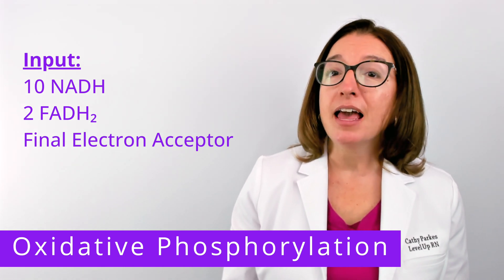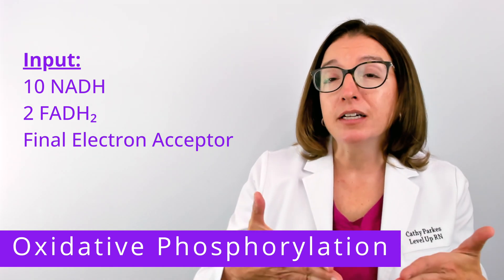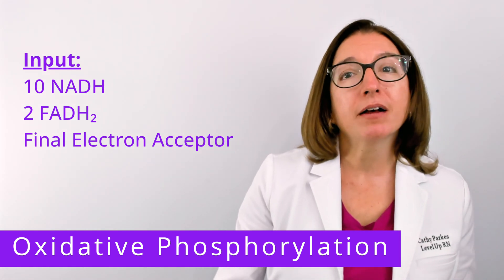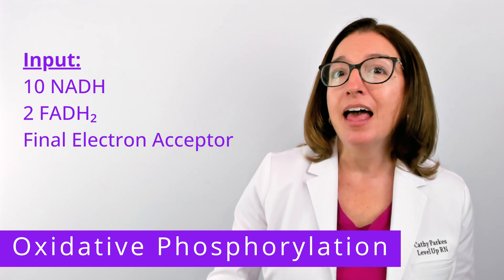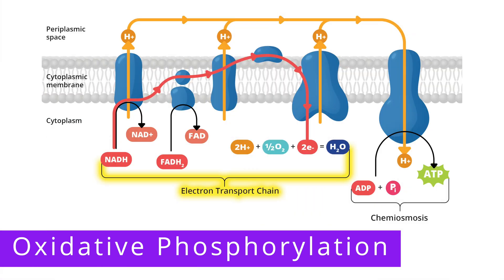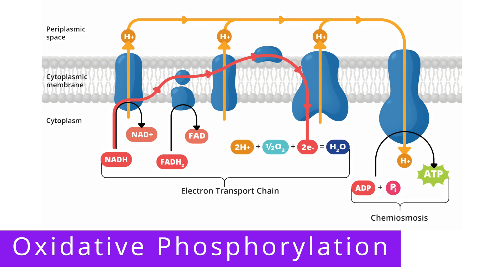As a reminder, the NADH and FADH2 molecules entering the electron transport chain were outputs from glycolysis, the transition reaction, and the citric acid cycle. In the electron transport chain, high-energy electrons from NADH and FADH2 are passed from one protein complex in the membrane to another in a series of redox reactions — reduction and oxidation reactions. The energy released from these redox reactions is used to move protons (hydrogen ions, H+) from one side of the membrane to the other, forming a proton gradient. The electrons are ultimately delivered to the final electron acceptor, which is oxygen in aerobic respiration.